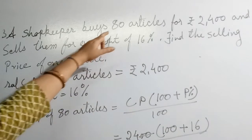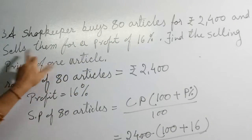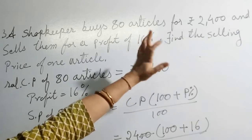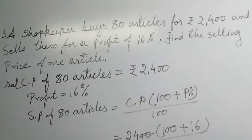That means 2400 for 80 articles, and sells them for a profit of 16 percent. When you sell it, you will get 16 percent profit. Find the selling price of one article - they are asking directly to find the selling price of the article.